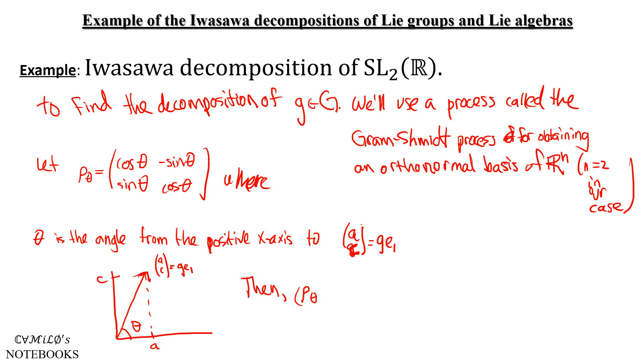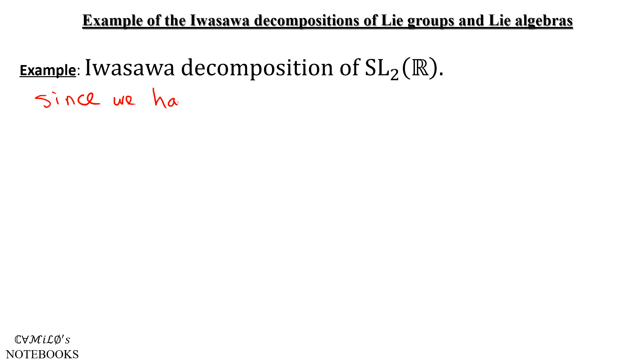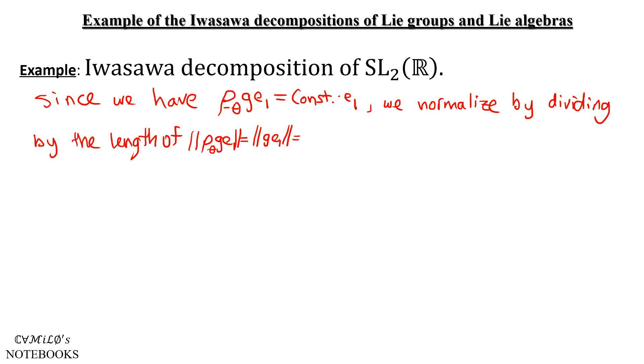Consider the inverse of that rotation. So rotate by negative θ and apply that to G times E₁. And we'll get a vector on the x-axis, which in turn will be a scalar multiple of E₁. So some constant times E₁. And following the Gram-Schmidt process, we need to normalize it by dividing by the length of this vector, which the rotation doesn't affect the length, so that the length of this vector is the length of just GE₁, which is the length of (A,C), which is the square root of A² plus C². And we'll define that to be R, some positive real number.